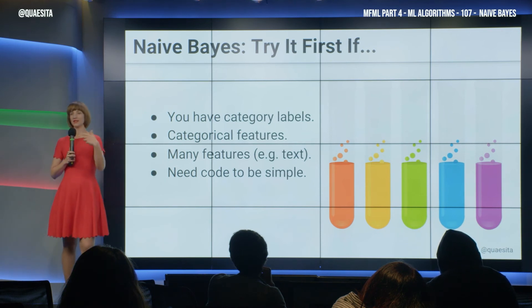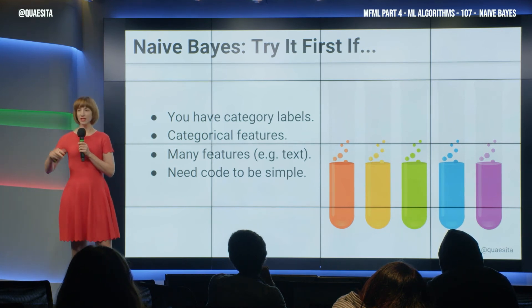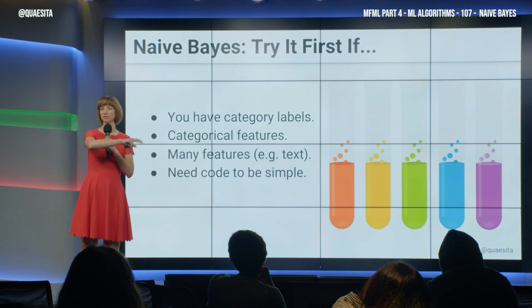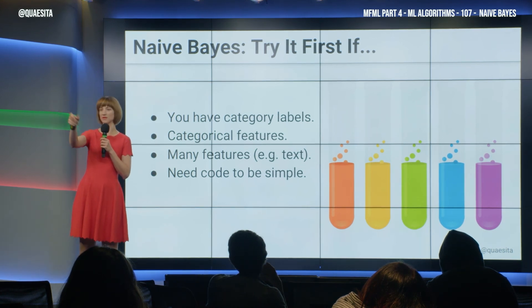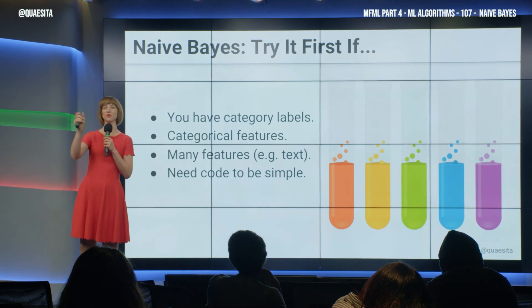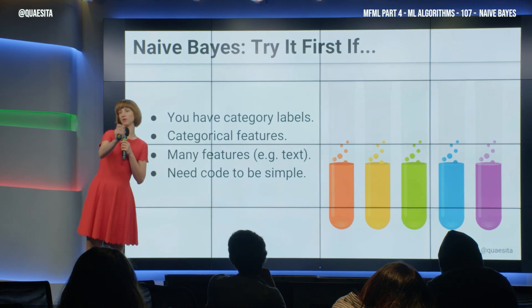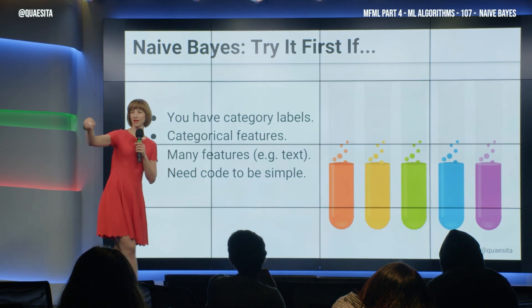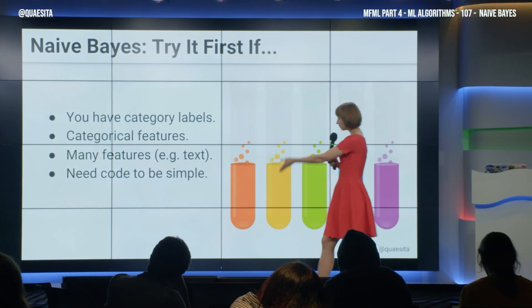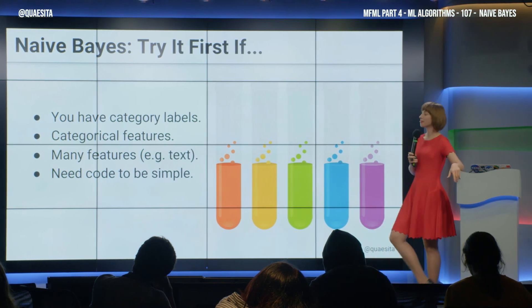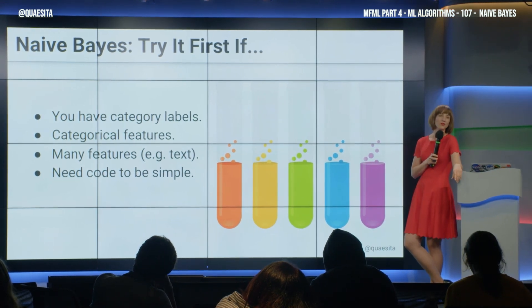With text, the way data actually tends to be encoded is you have all the possible words one could meet in an email, and you ask: present or absent, or how many times present. So you have a bunch of zeros — in this email, zero times the word 'hippopotamus,' zero times 'tiger,' one time 'free,' one time 'shipping.' That row has counts of that sort. There are lots of features, and this can handle that situation. It's also great when you need your code to be simple — the operations are super simple.